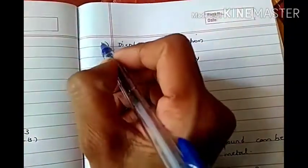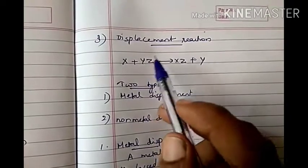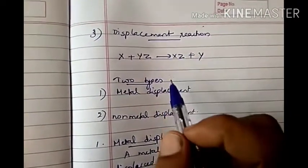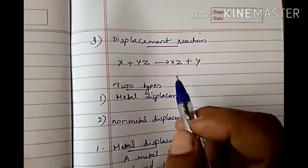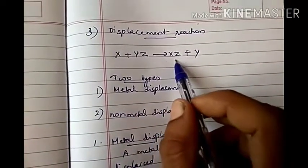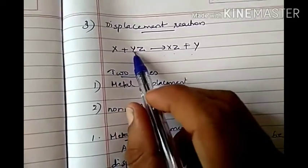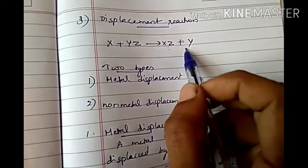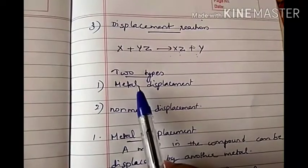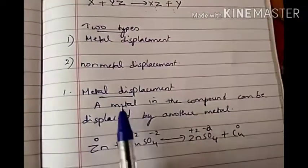The third type of reaction is displacement reaction. It may be defined as a reaction where an atom or an ion is displaced by another atom or ion, represented as: X + YZ → XZ + Y, where X is replacing Y. Displacement reaction is divided into two types: metal displacement reaction and non-metal displacement reaction.